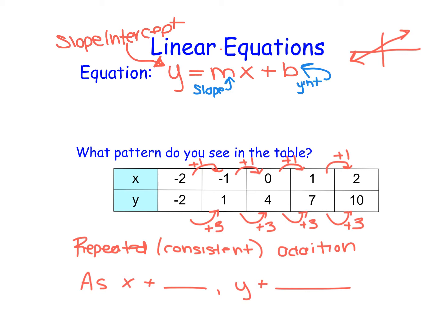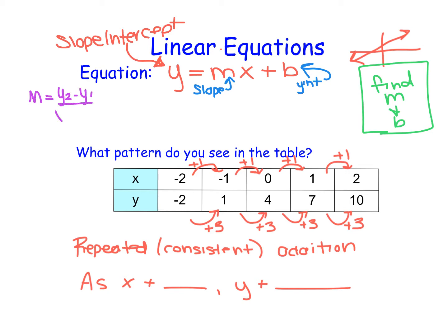So we're going to have to find m and b in order to write our equation. I know that slope is y2 minus y1 over x2 minus x1.